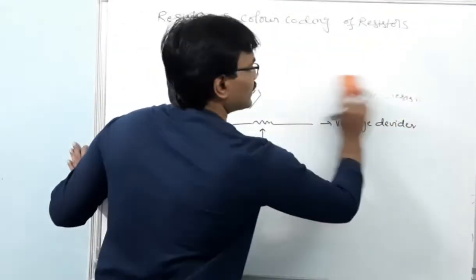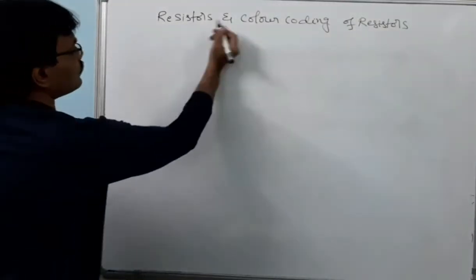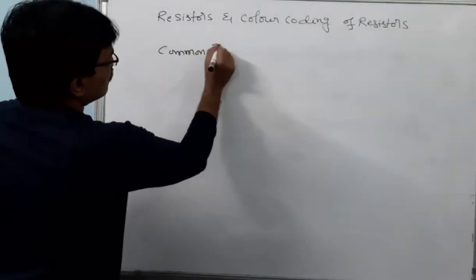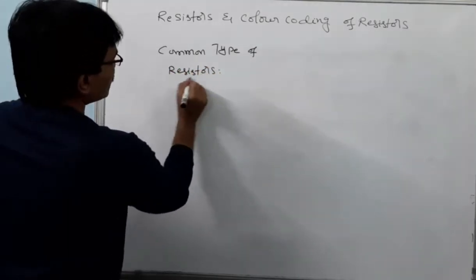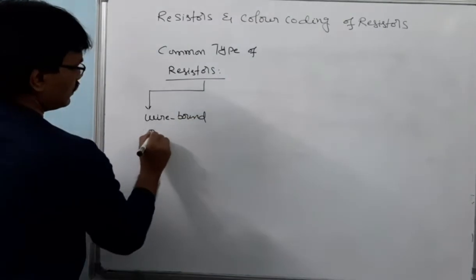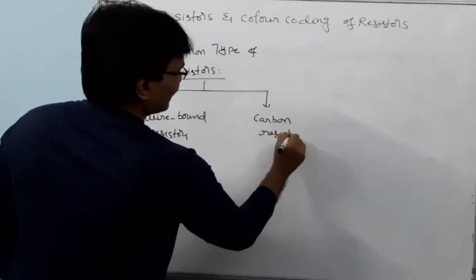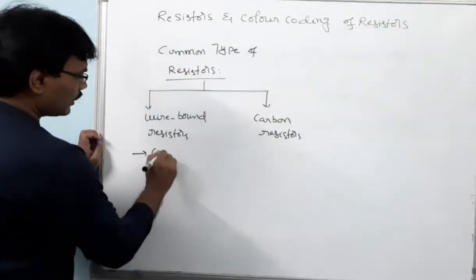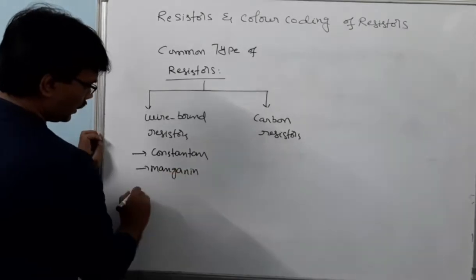Now let us see the commonly used commercial resistors. Basically there are two types of resistors we use. The first type is wire-wound resistors. These are made up of materials or wires like constantan, manganin, and nichrome wire. These wires are wound or bound on an insulating base to make a resistor.